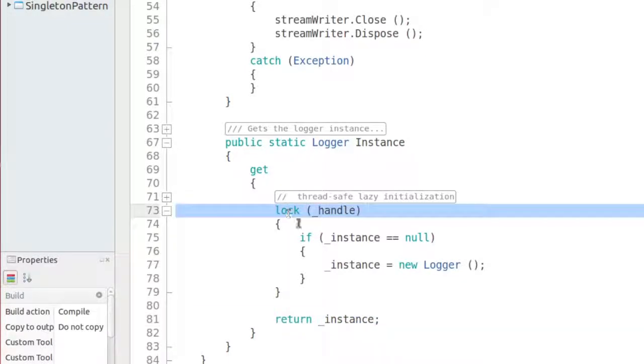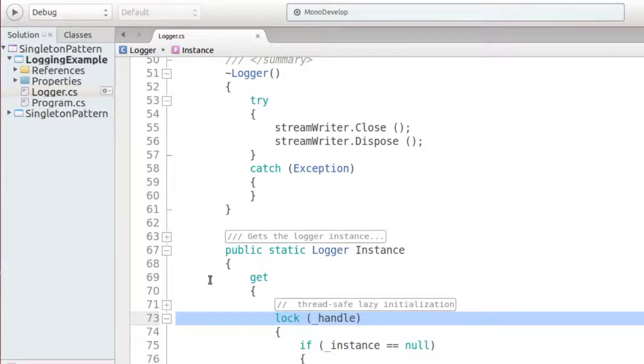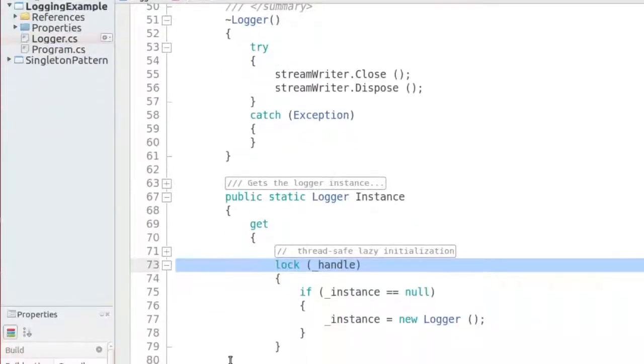Also note that the lazy initialization code is protected with a lock statement. This lock ensures that only a single thread can execute the code at any given time. So, this small fragment of code implements thread-safe lazy loading and ensures that the log file is opened only at the last possible moment.